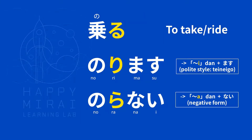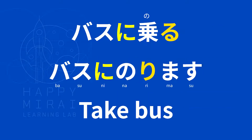Next verb: 乗る (noru) — this one is more referring to taking a bus or a train — to take, to ride. 乗ります (norimasu). 乗らない (noranai). Example: バスに乗る (basu ni noru) — バスに乗ります (basu ni norimasu) — take a bus.